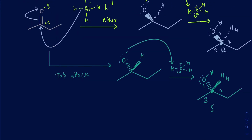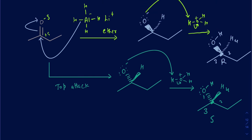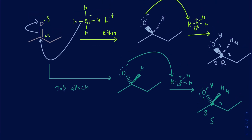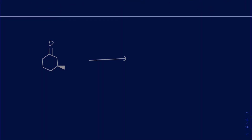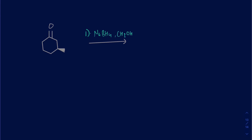Before we finish, one important point: it's not always true that a ketone gives a racemic mixture. Suppose you have a ketone that already has a chiral center present in the molecule. If you use NaBH4 in the presence of methanol and work it up with acid, you are going to be making two products — but they won't necessarily be enantiomers.